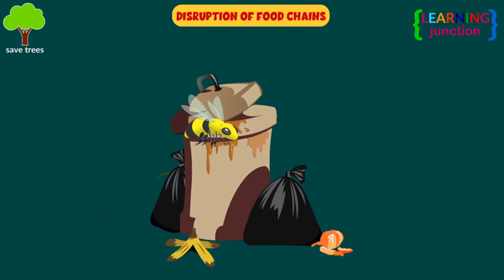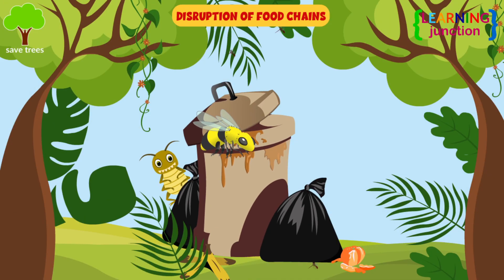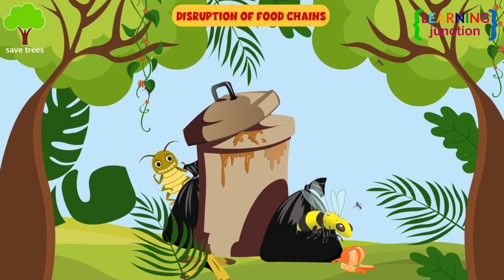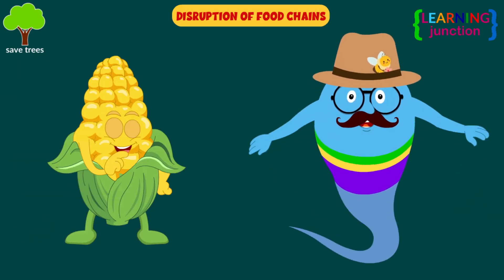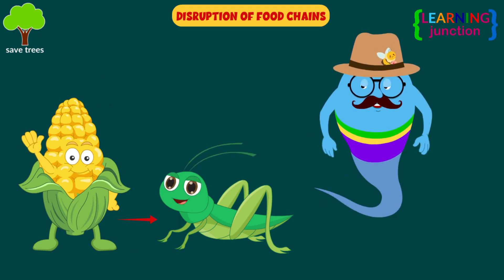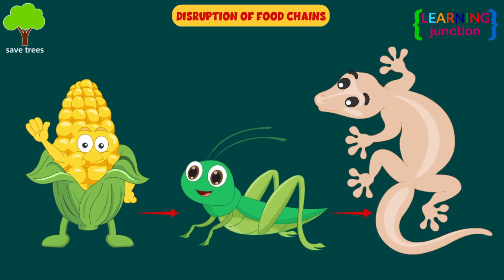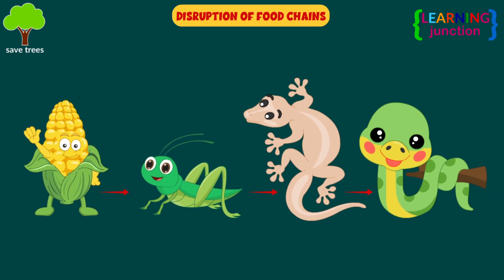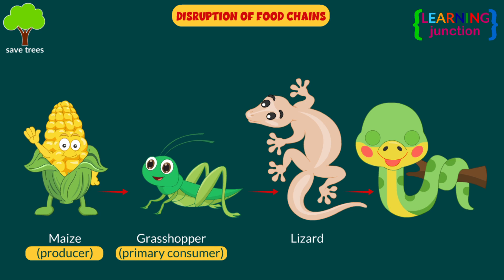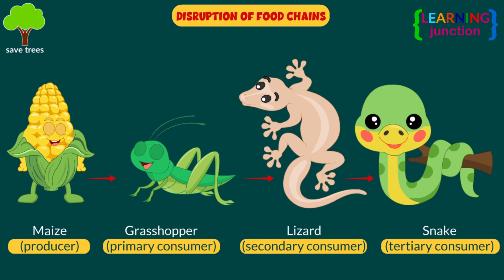Disruption of food chains. Insects are at the base of all food chains and have an immense amount of biodiversity. Look at this simple food chain. The grasshopper, which is an insect, eats the plant. The lizard eats the grasshopper, and the snake eats the lizard. This way, each link transfers energy to the next level. Without the insects, almost all the food chain will be disrupted.